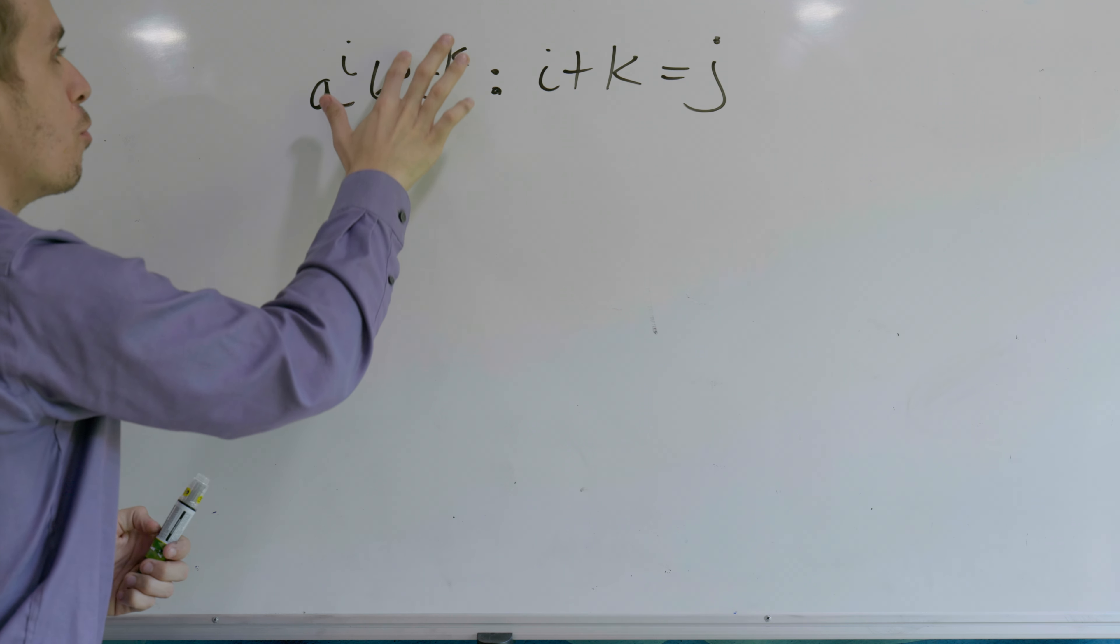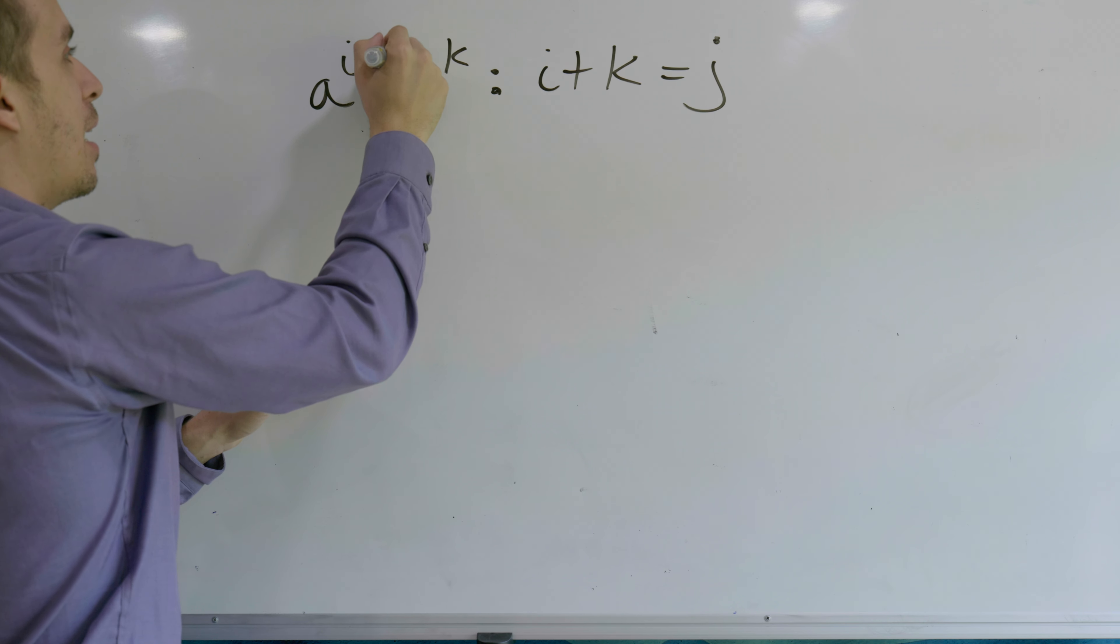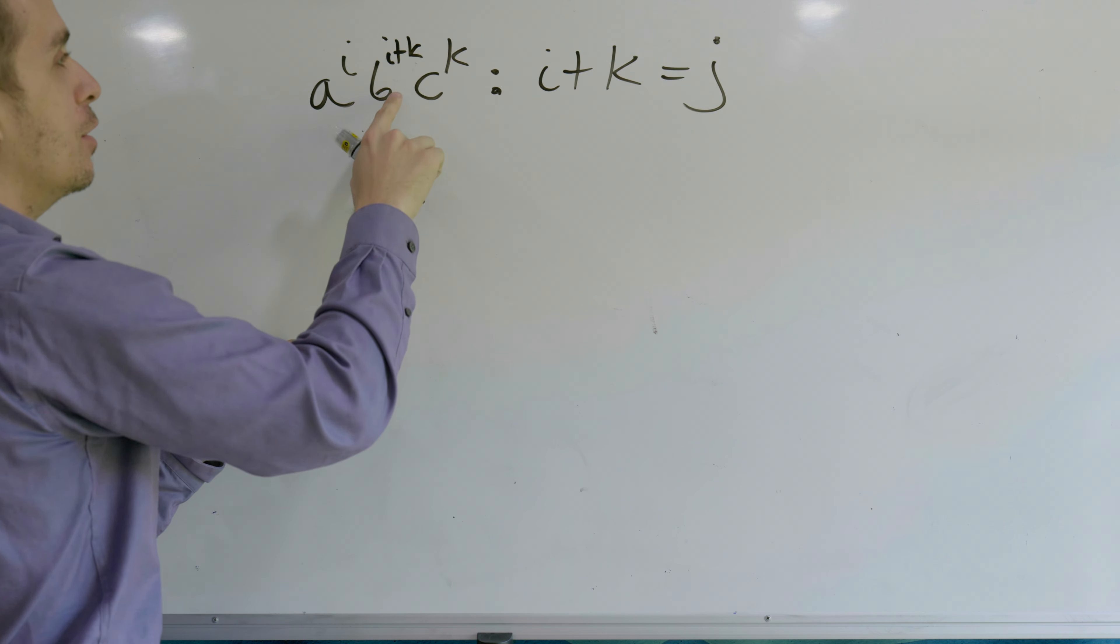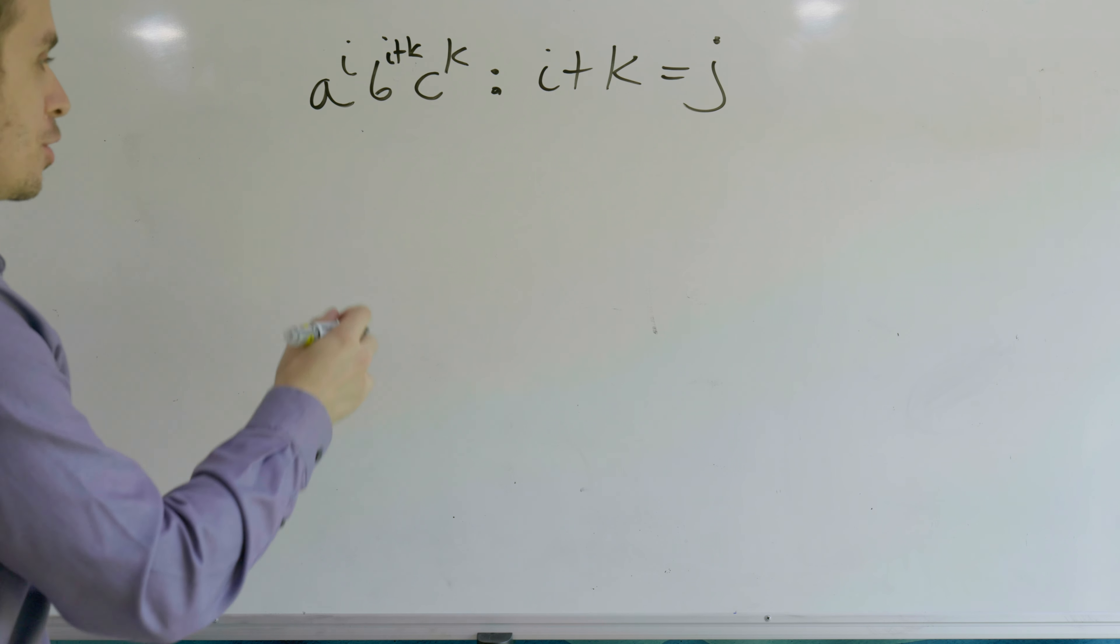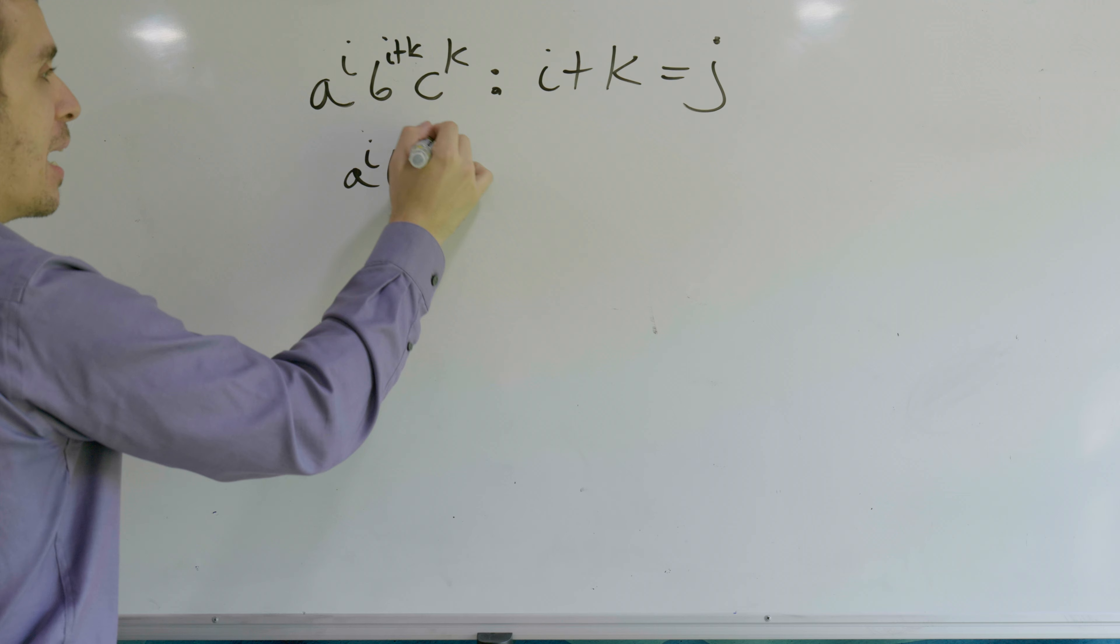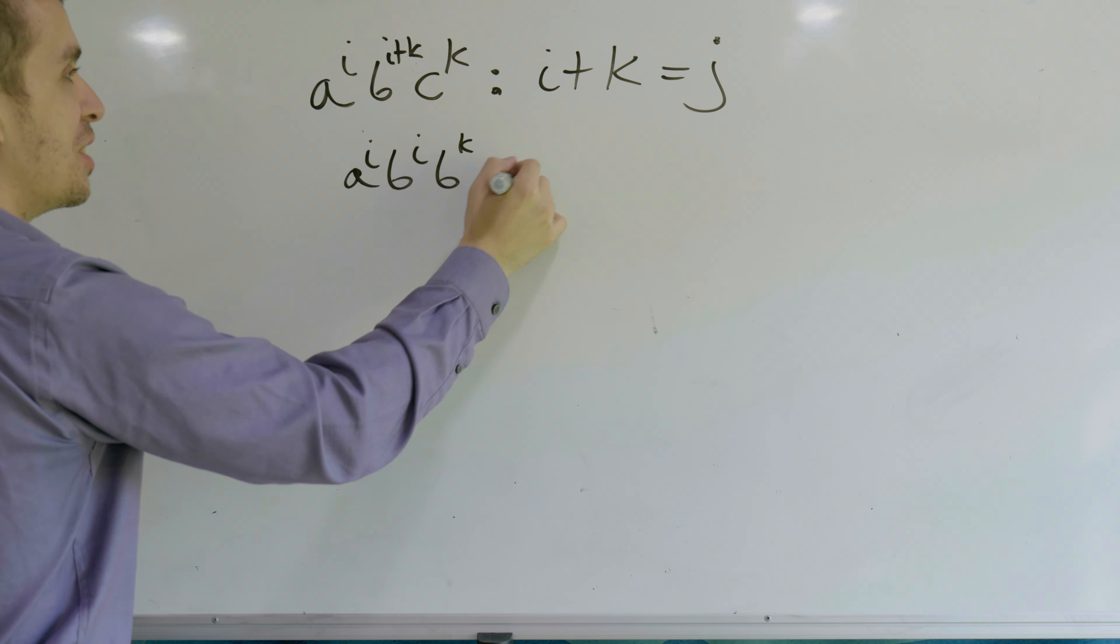You can actually rewrite this language as i plus k in terms of the exponent for b, the number of b's. So if you think about this, you can rewrite the string as a^i b^i b^k c^k.